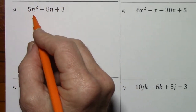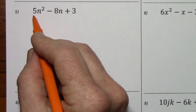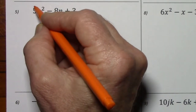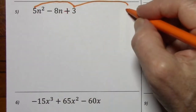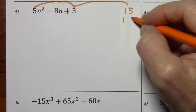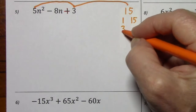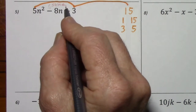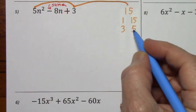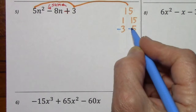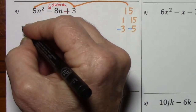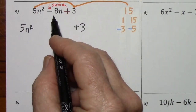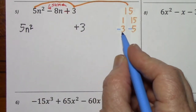Looking at number 5, there's no GCF other than 1. We have three terms with leading coefficient other than 1, so we'll use factor by grouping. Multiply first times last. There are all the factor pairs. Noting the last term is positive, we want a sum of negative 8. So if we had negative 3 and negative 5, we could get a negative 8. Keeping the first term, keeping the last term, we'll rewrite the middle term as negative 3n and negative 5n.